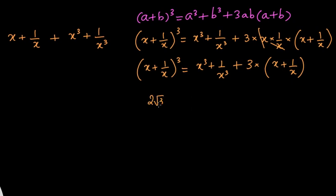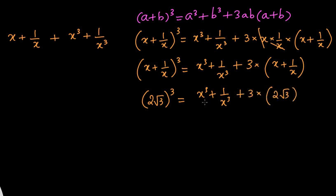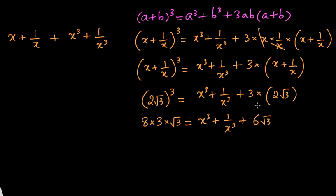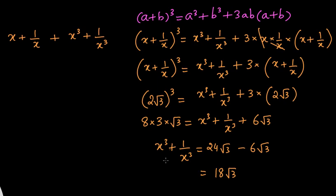Substituting: 2 root 3 whole cubed equals x cubed plus 1 by x cubed plus 3 times 2 root 3. Now 2 cubed is 8, and root 3 cubed is root 3 times root 3 times root 3, so two of them give 3 and one root 3 remains — giving 8 times 3 root 3, which is 24 root 3. So 24 root 3 equals x cubed plus 1 by x cubed plus 6 root 3. Taking 6 root 3 to the other side, x cubed plus 1 by x cubed equals 18 root 3.